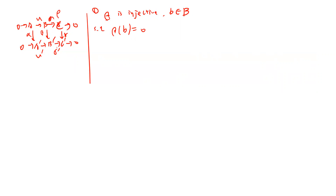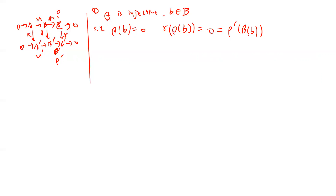We notice that γ(ρ(b)) = 0. Why? Because γ(ρ(b)) by definition equals ρ'(β(b)) by commutativity of the diagram. Since β(b) = 0, ρ'(β(b)) = 0, and so γ(ρ(b)) = 0.